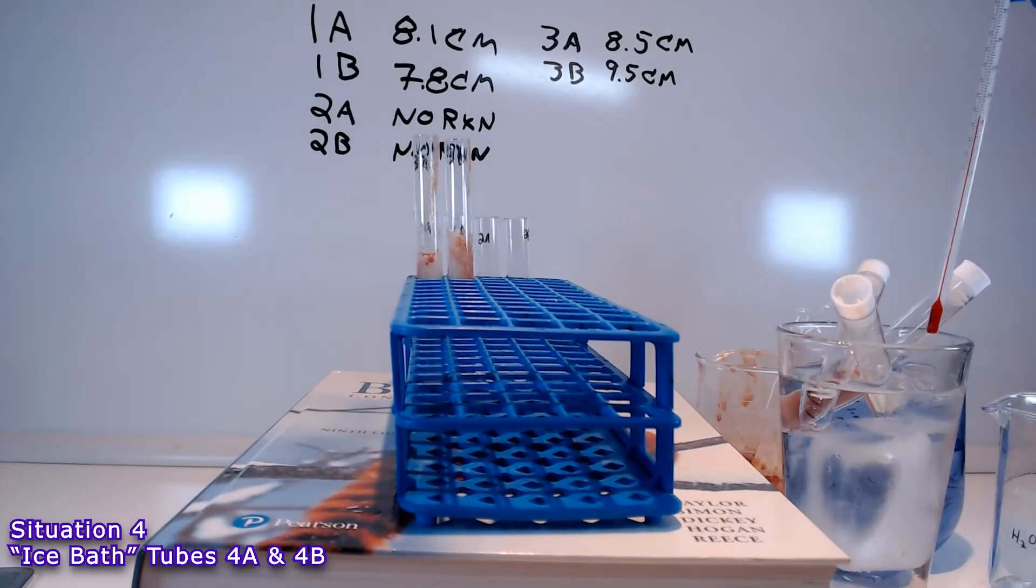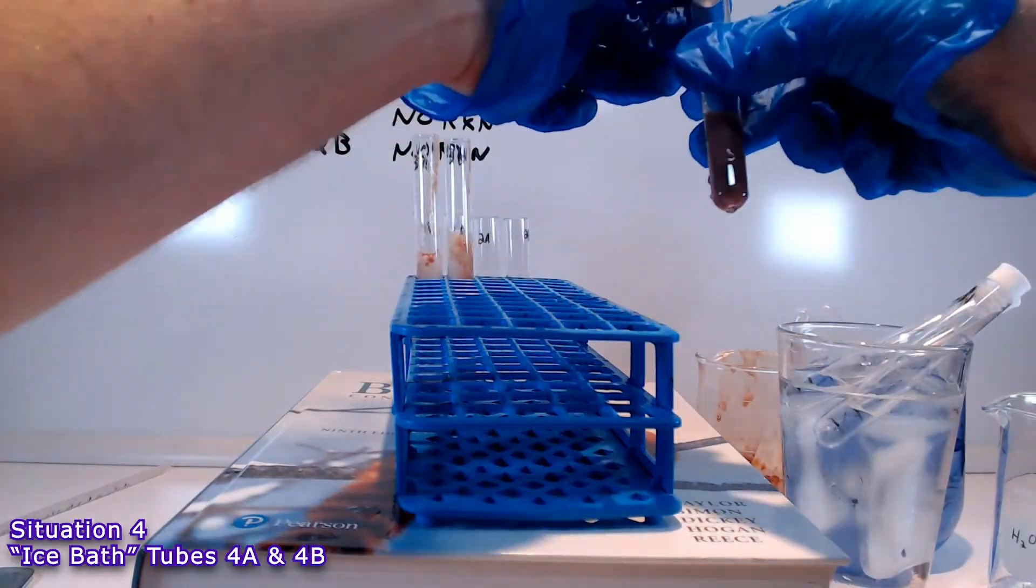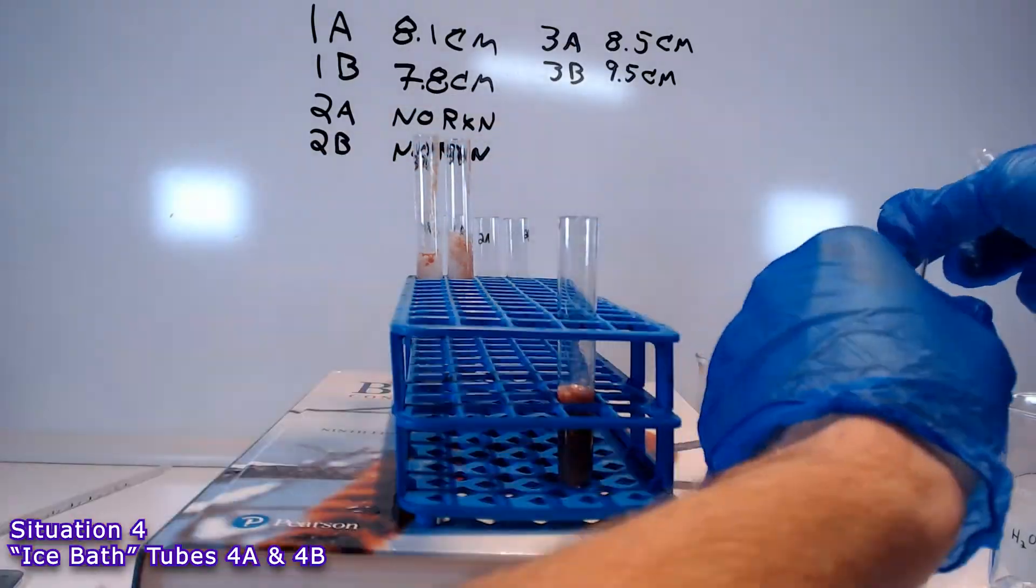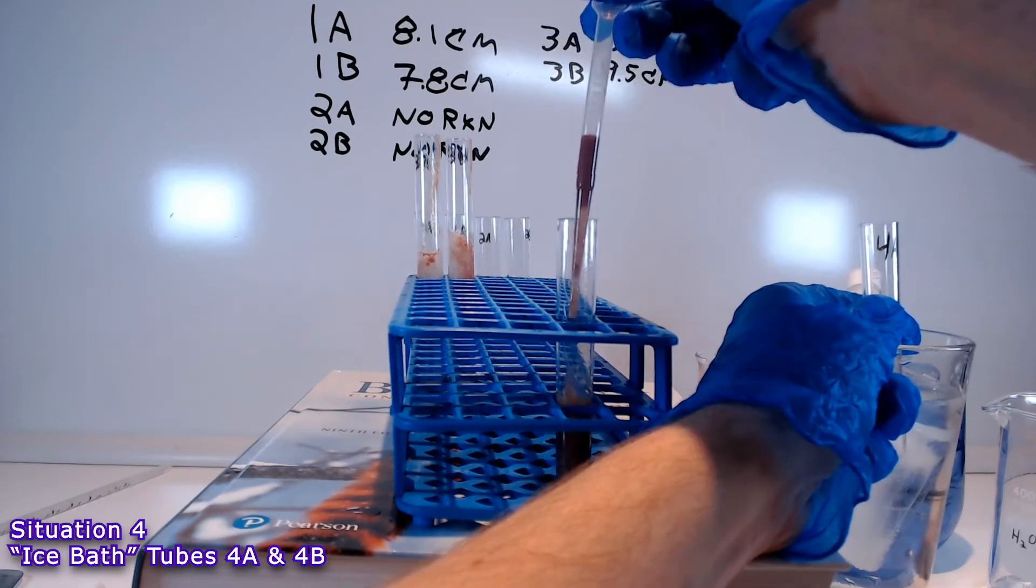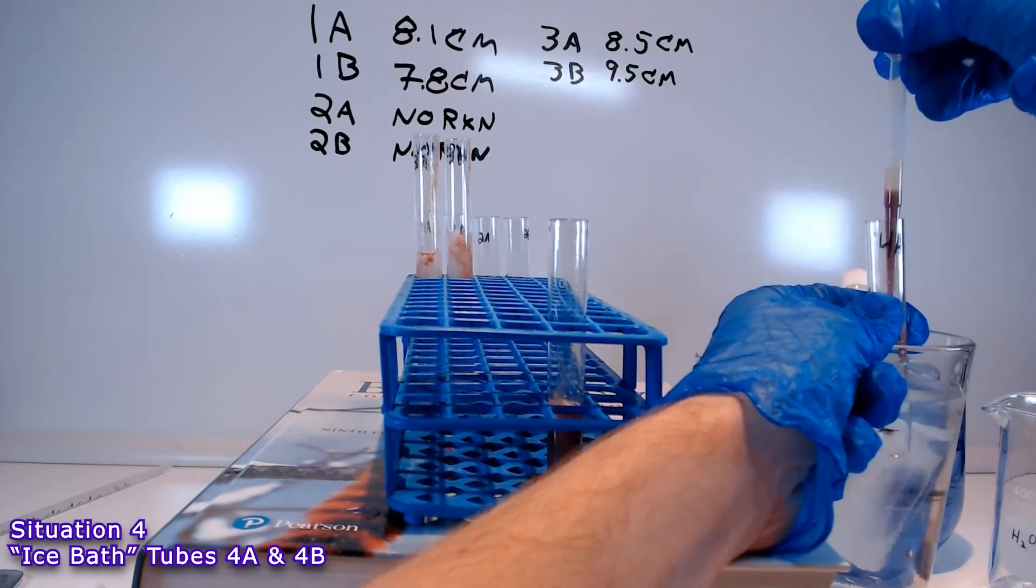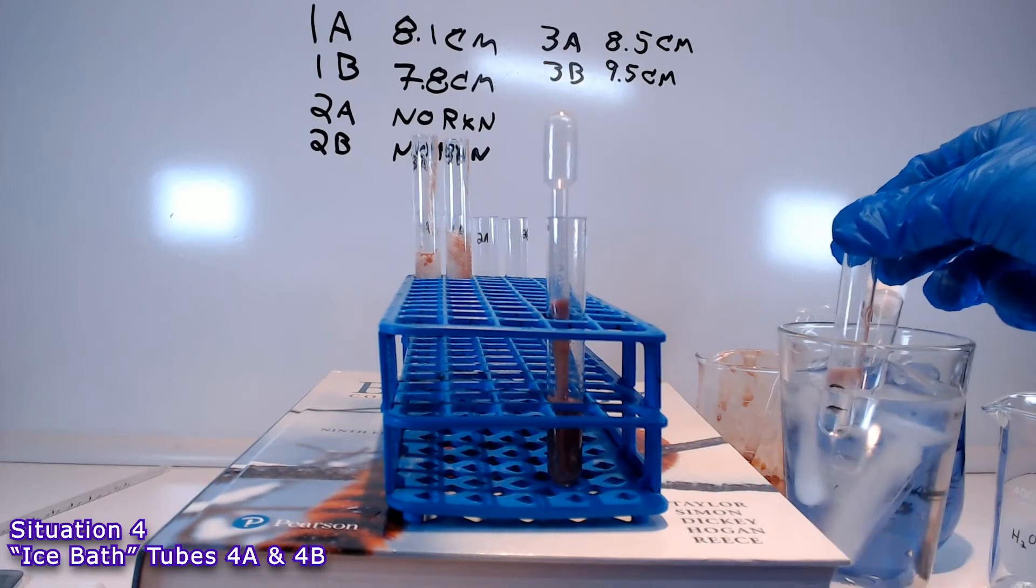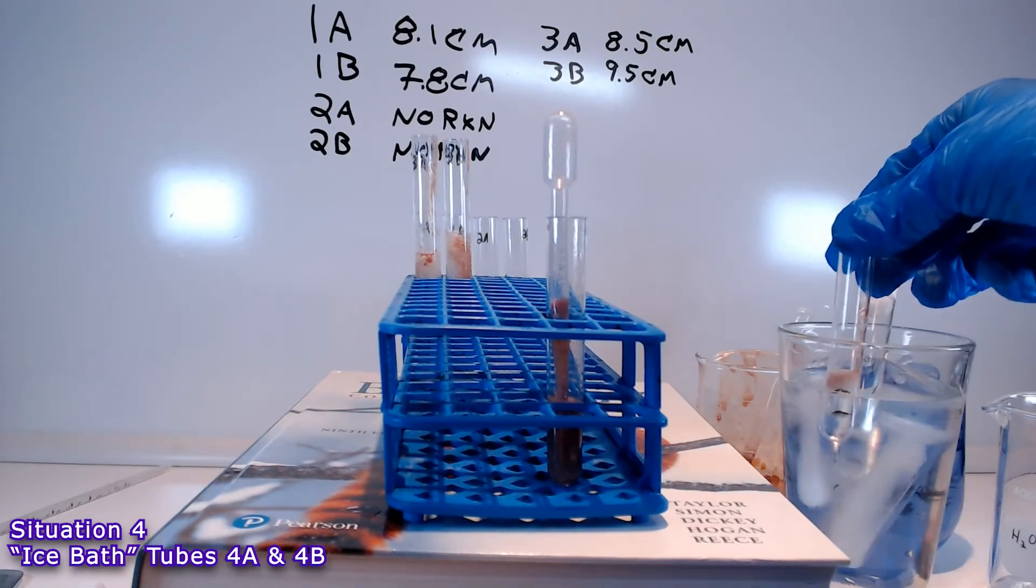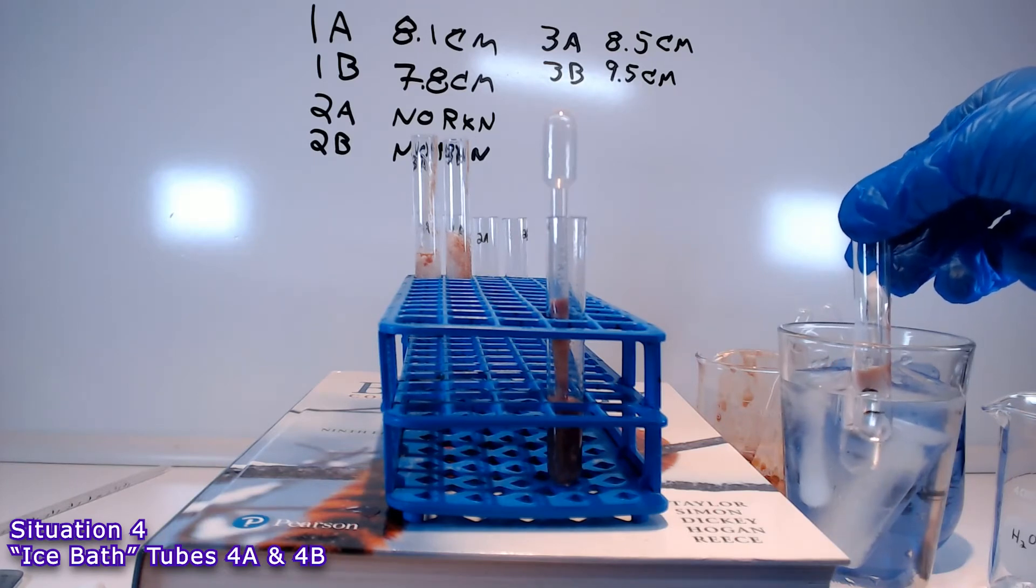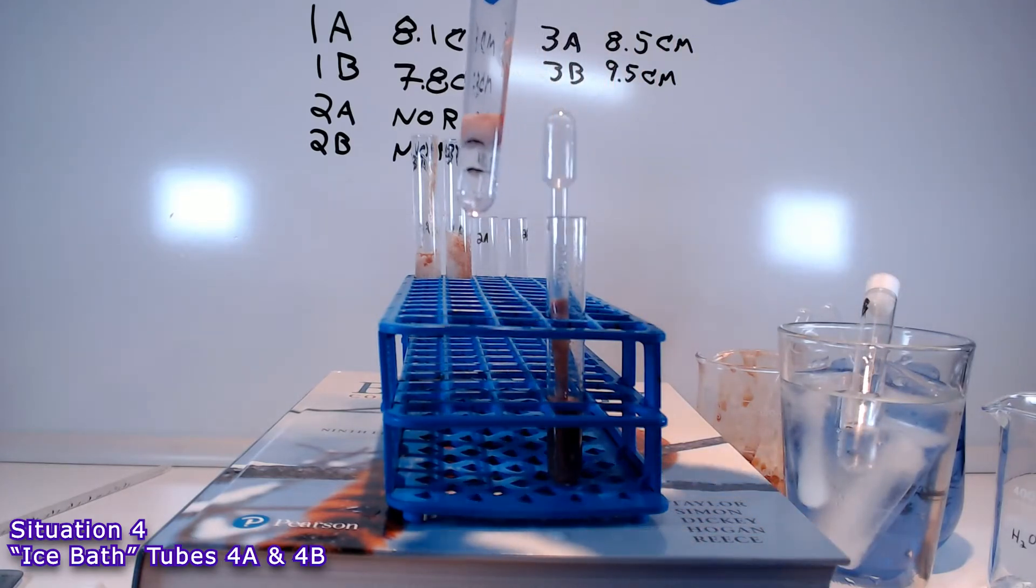But the trick with this experiment is that we want to keep the tubes on ice while we are doing this experiment. You get a much better result that way. This is an exothermic reaction, which means that as it proceeds forward, it releases energy to the environment. So, if you want to see how catalase operates in cold conditions, you need to keep it on ice because the reaction that it's catalyzing will end up warming up the environment by itself.